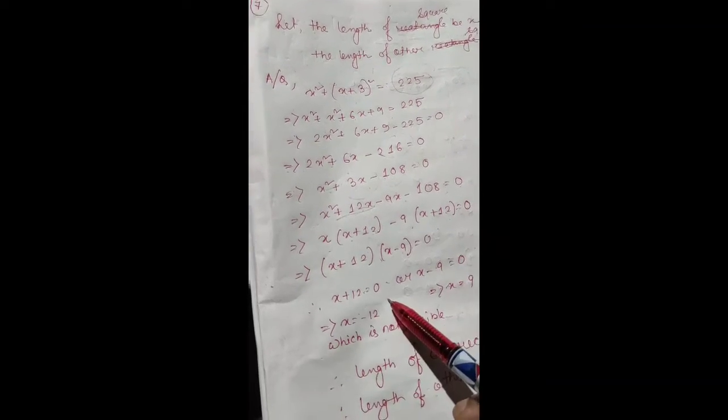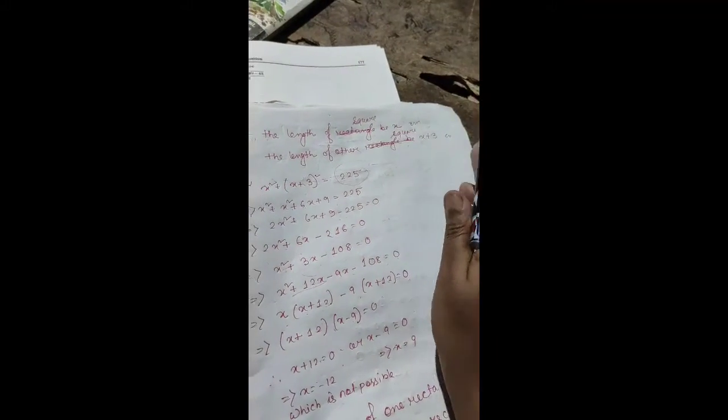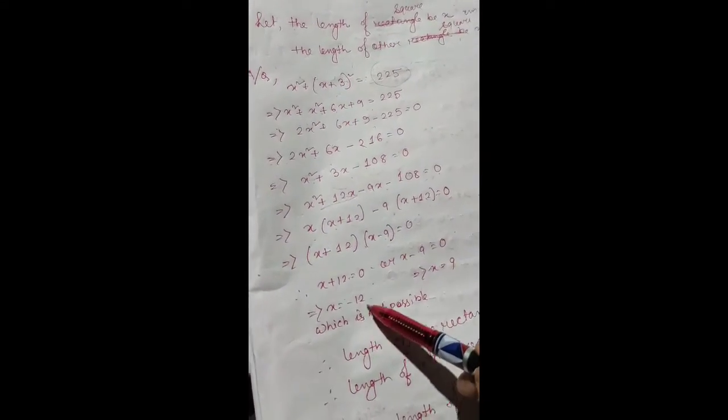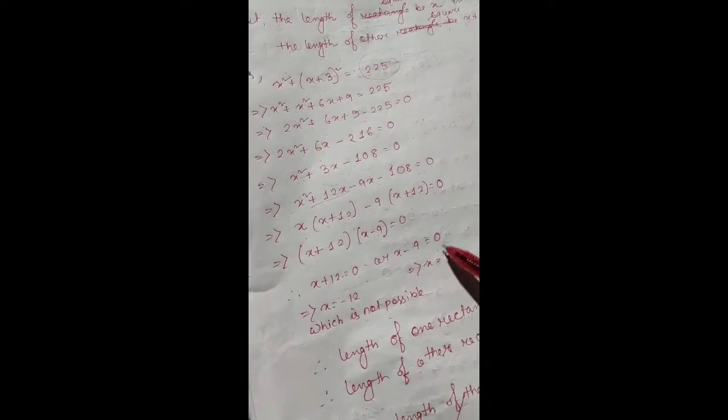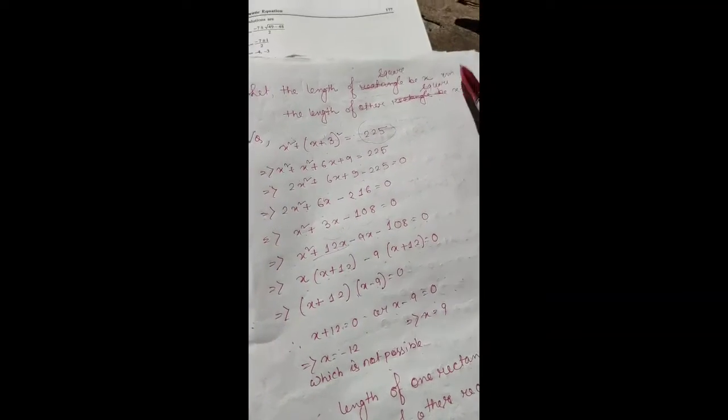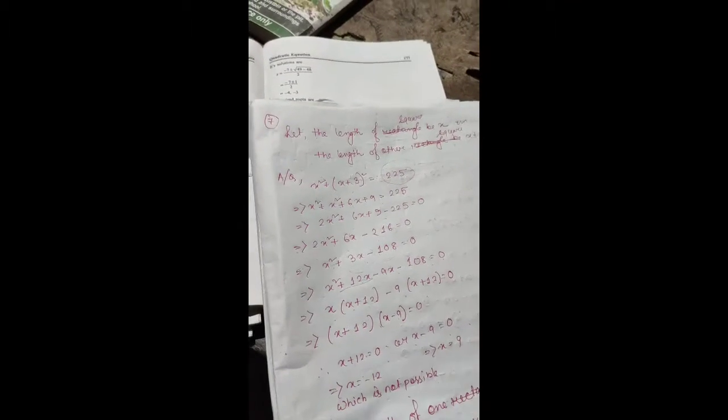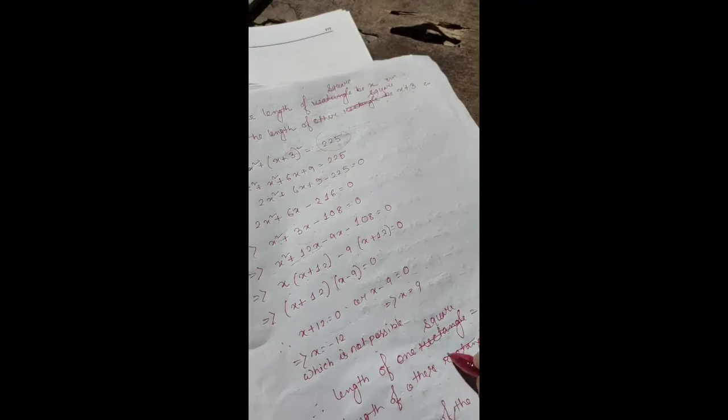But x cannot be negative because length cannot be negative, which is not possible. So x equals 9. One side of the square is 9 centimeters. Again I have written rectangle, sorry it should be square. So one is 9 centimeters, the other is 9 plus 3 equals 12 centimeters.